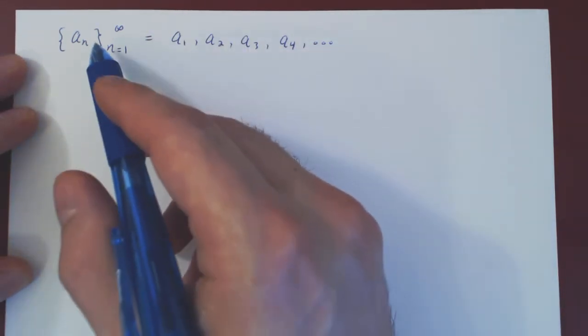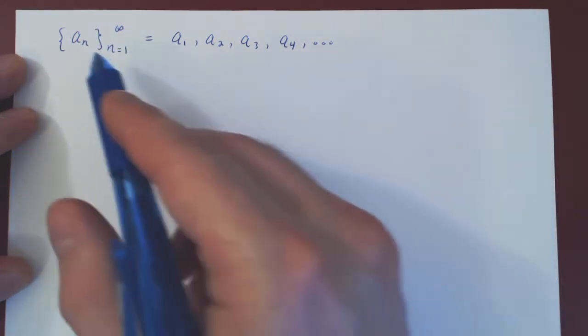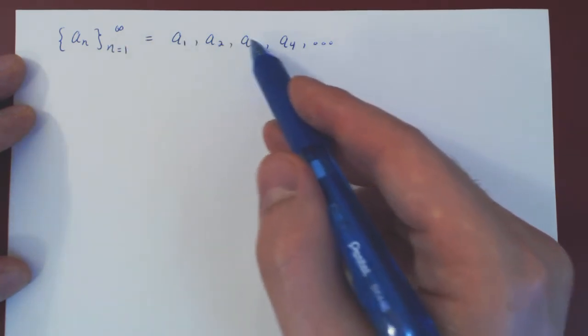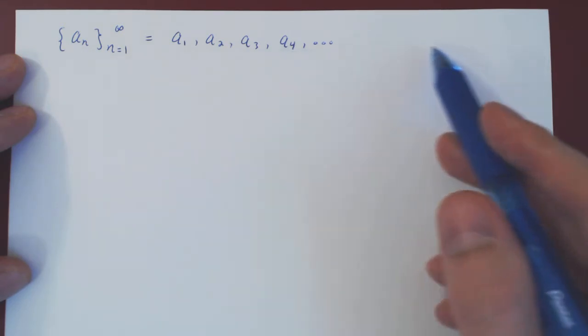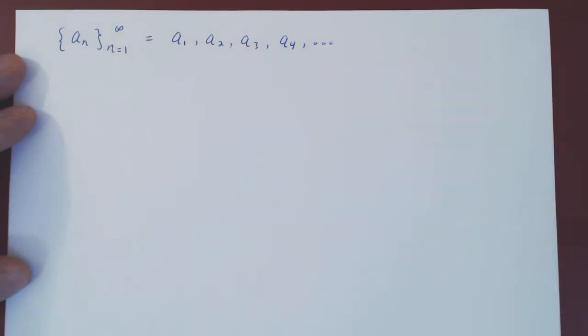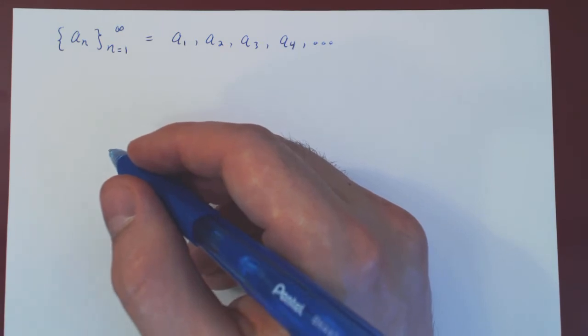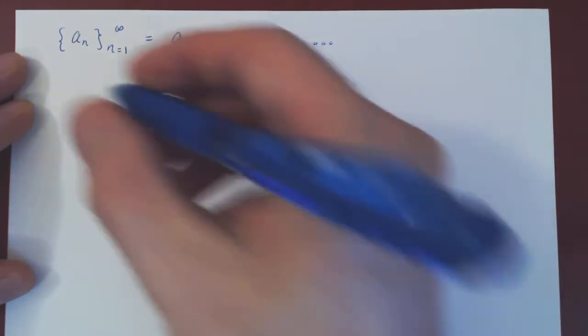So in general, we can take any infinite list of real numbers, therefore any sequence. So we have here the sequence a1, a2, a3, a4, and so on. And we're going to try to add all of these real numbers. But let's be rigorous, and then we'll look at the series more intuitively. So first, we'll form what's known as the sequence of partial sums.